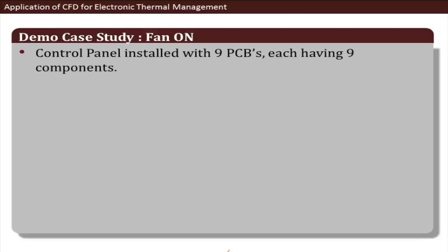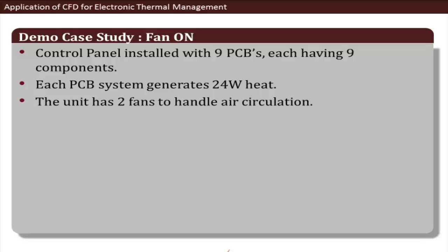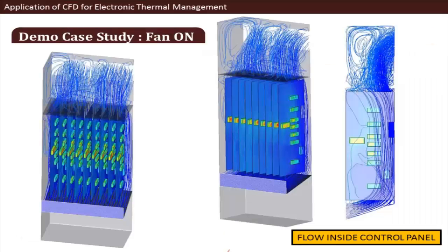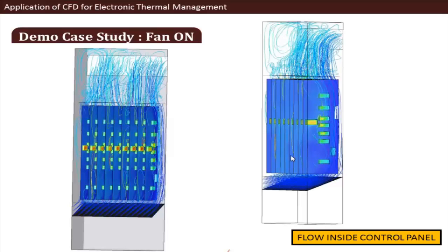Now, with both fans switched on at their rated flow rates and the same 24-watt heat load, we immediately see a significant drop in temperature across the components and PCBs. Some components still show higher temperatures due to their higher watt density, but overall there is a clear temperature reduction. Good air recirculation is visible, and the ramp effectively redirects air from the inlet into the PCB racks. The PCBs have cooled substantially and temperatures are well within acceptable range.